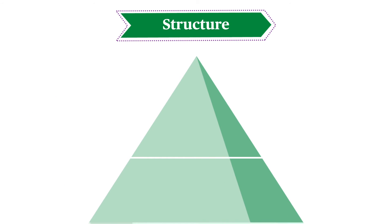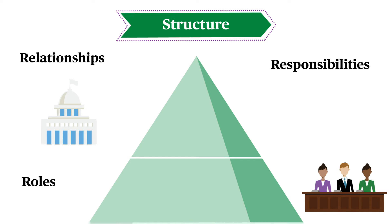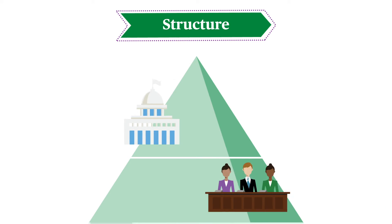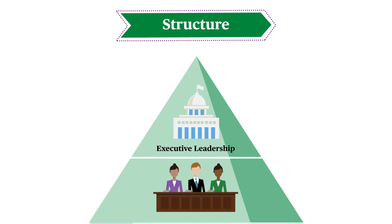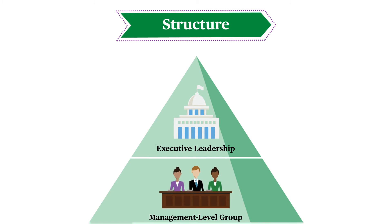The structure component includes establishing the roles, responsibilities, and relationships among data governance groups. A clear structure explains how everyone contributes to data governance, fosters collaboration, and identifies who makes different kinds of decisions. The data governance structure should include at least two groups: an executive leadership level group that ensures the program has organizational authority and resources, and a management level group that oversees establishing and implementing data policies and processes to improve data quality and use.